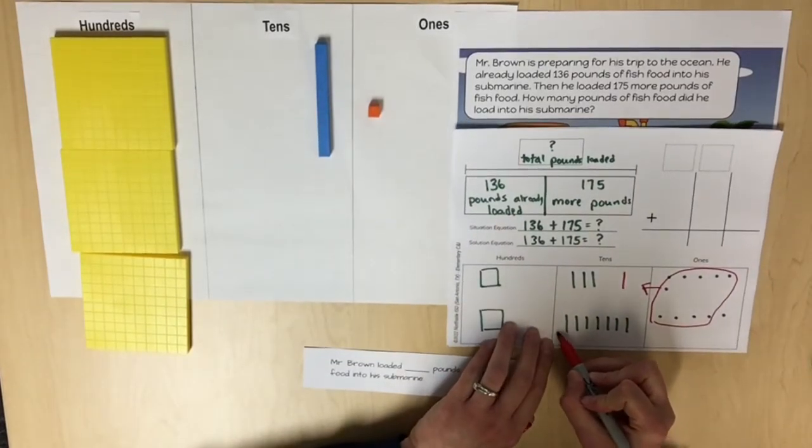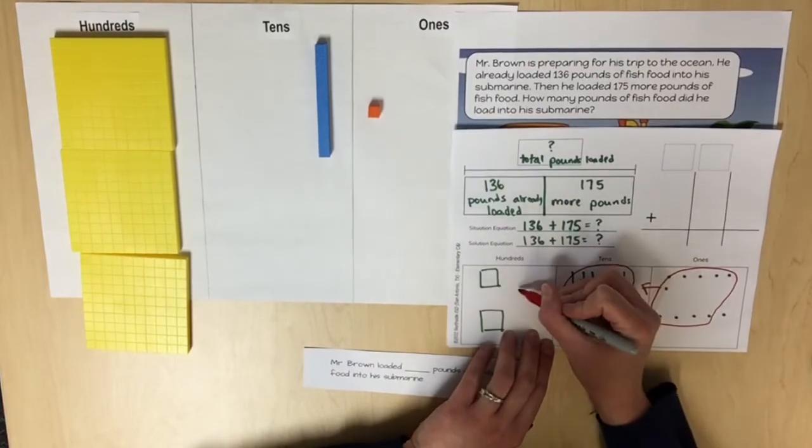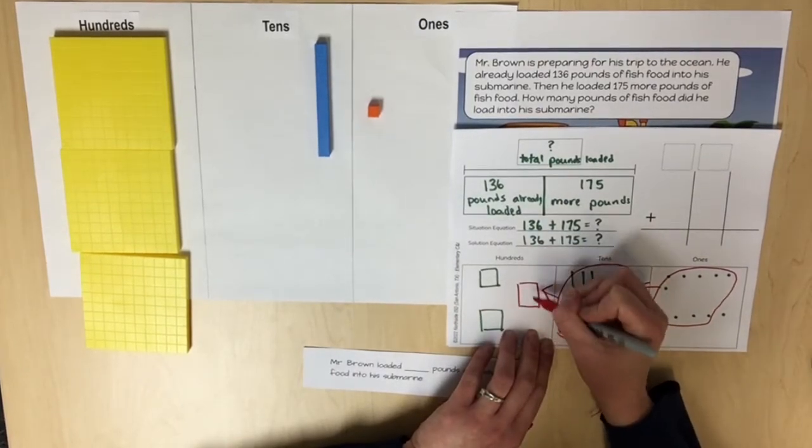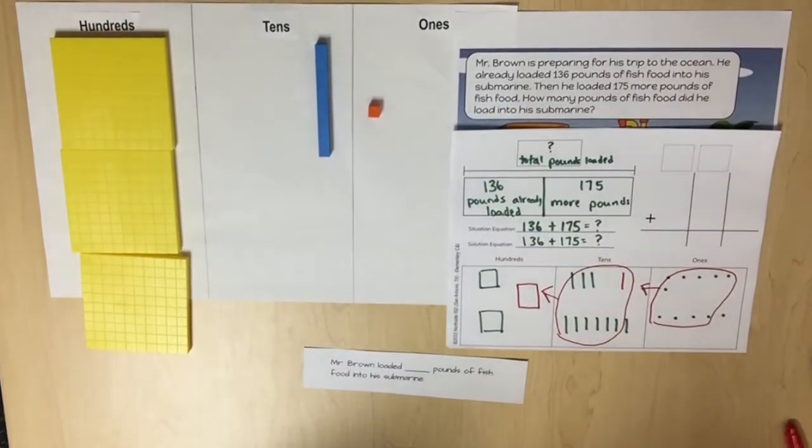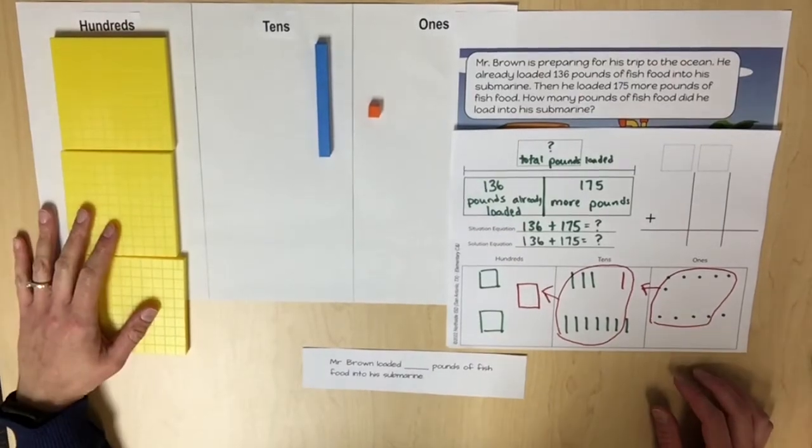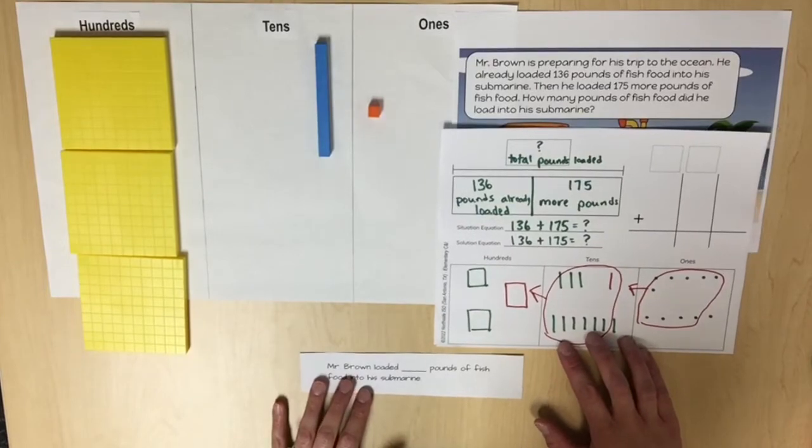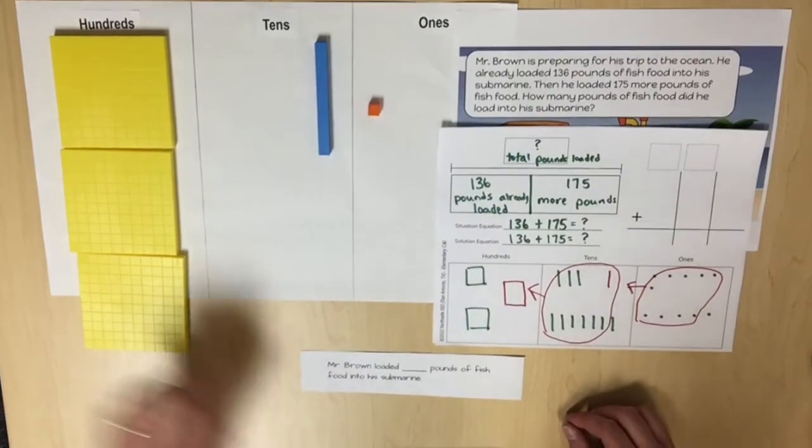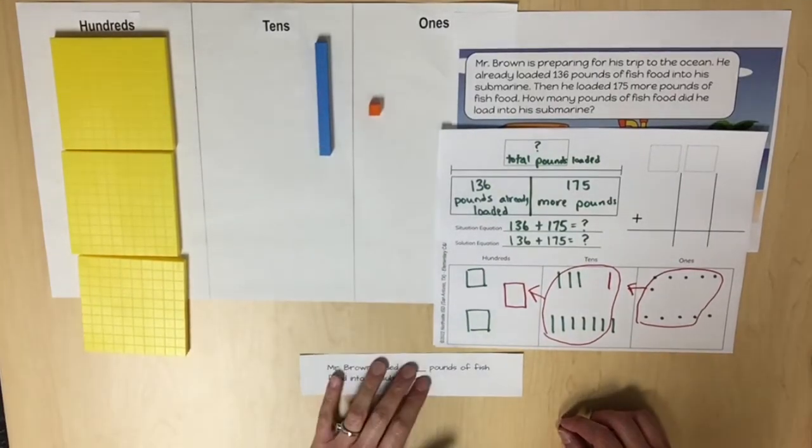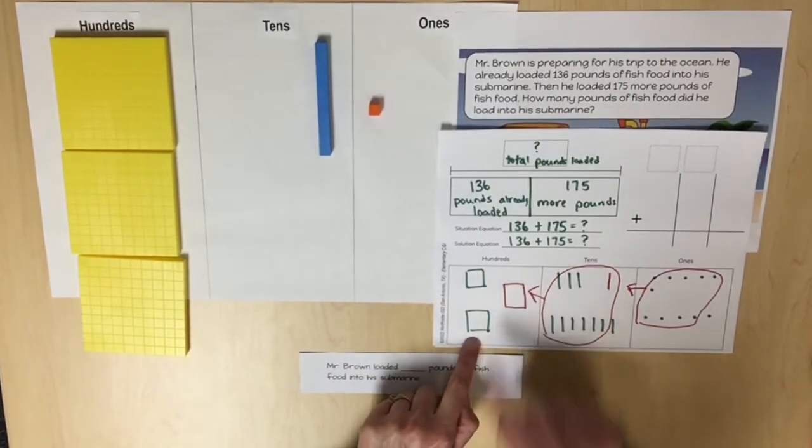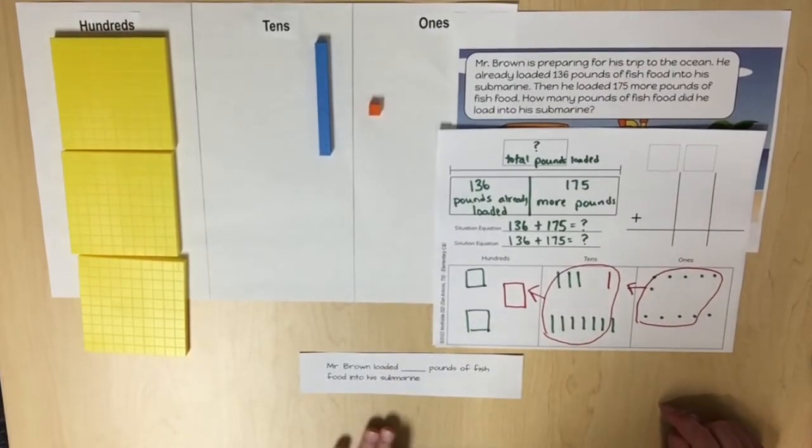In our pictorial representation, we're going to show again that 10 tens can be used to compose 100. Then we need to ask students to use the base 10 blocks or the pictorial representation to determine the total. So here I can see I have 311, and in my pictorial representation, again, I have 3 hundreds, one ten, one one, so again this is showing me 311.